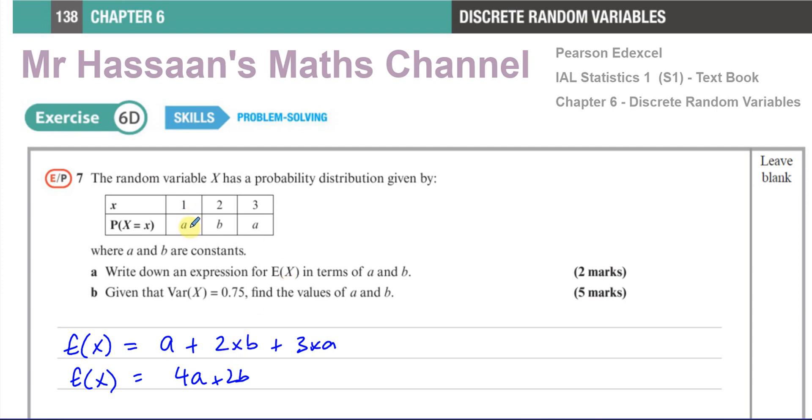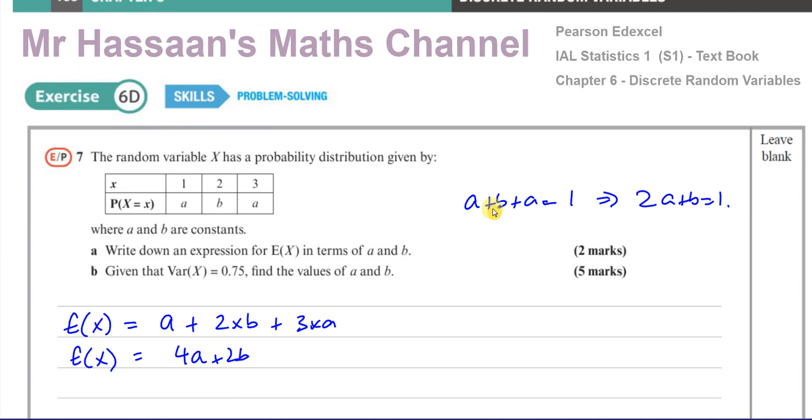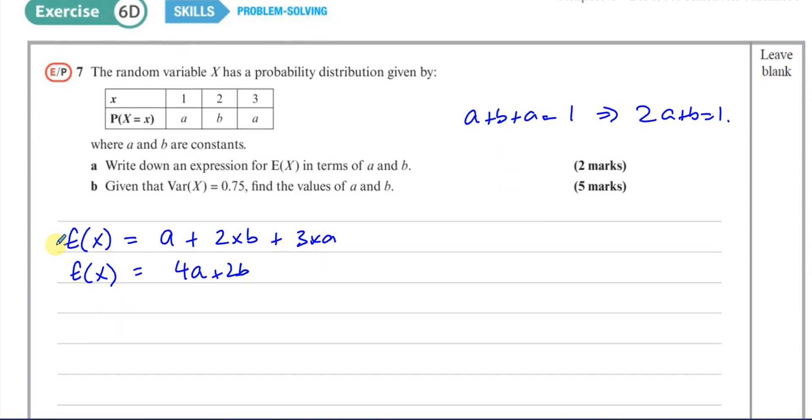Remember, with a normal frequency table, you then divide by the total of the frequencies. Well, we know that the total of these frequencies is equal to 1. And that's probably something that's going to help us later on in the question. I know from here that a plus b plus a, the probabilities must equal 1. So we can say from here that 2a plus b equals 1. And that might help us later on. Now, for part b, that's part a.